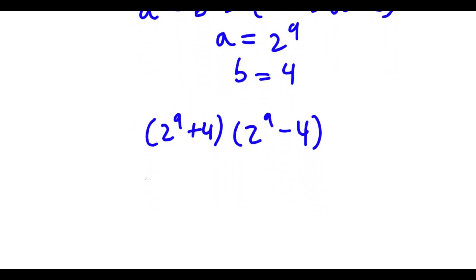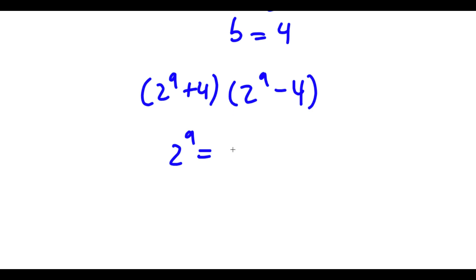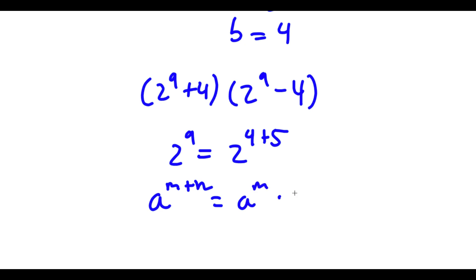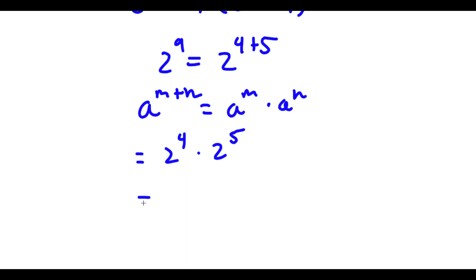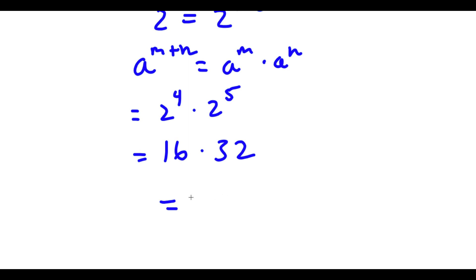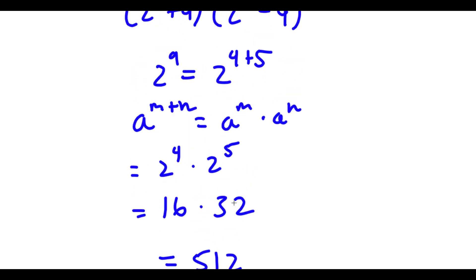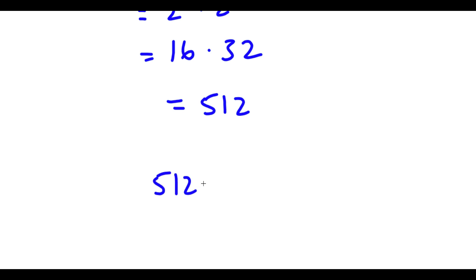Now, 2 to the power of 9 — let's go ahead and solve for this. 2 to the power of 9 is the same thing as 2 to the power of 4 plus 5. And if I have something in the form a to the power of m plus n, this is equal to a to the power of m times a to the power of n. So 2 to the power of 4 plus 5 equals 2 to the power of 4 times 2 to the power of 5. Now 2 to the power of 4 is equal to 16, and 2 to the power of 5 is equal to 32. So I have 16 times 32, which is equal to 512. So now I have 512 plus 4 times 512 minus 4.